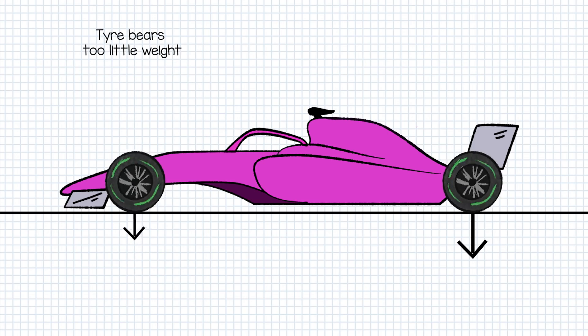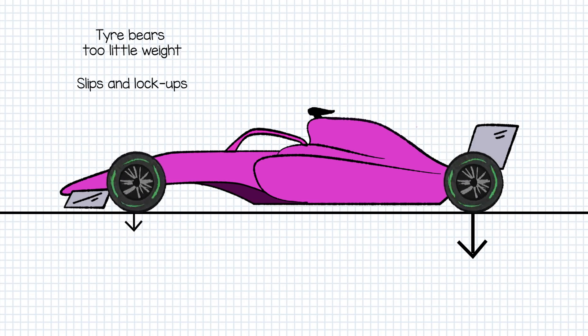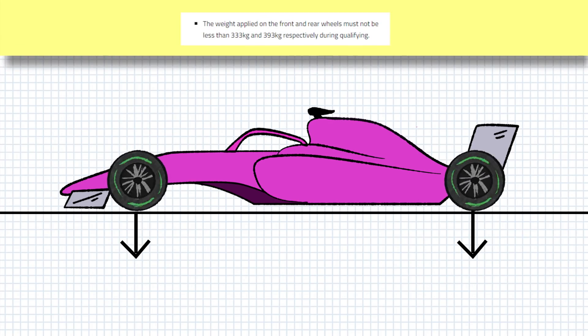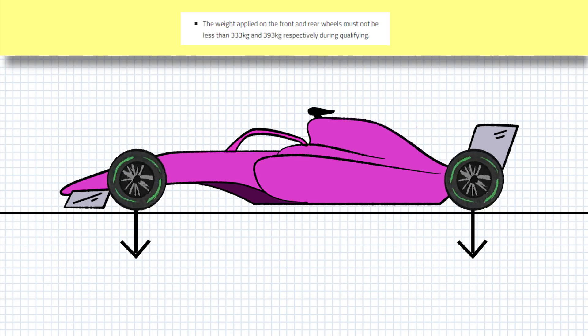If a tyre has too little weight pushing it into the ground, then it is more prone to slip and can more easily lock under braking. Pirelli designed front and rear tyres with certain expected weight demand thresholds and in fact the rules mandate that during qualifying, when the car is low fuelled, the weight applied on the front and rear wheels must not be less than 333 and 393kg respectively.